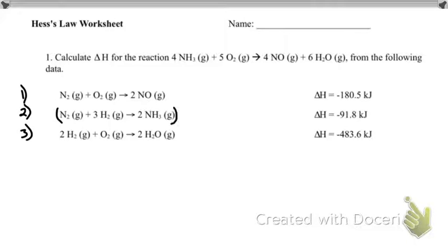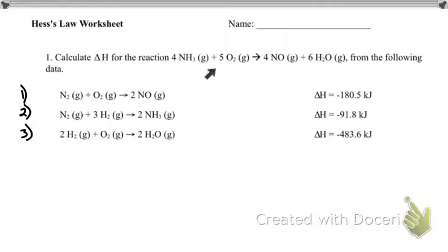The first thing I like to do is label all of my reactions. Then what I do is assess what I need. It looks like I need NH4 on the reactant side. Remember that this is our ideal reaction, and we have to make this reaction out of these three reactions.